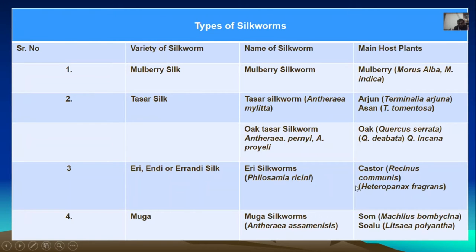The tassel silk is also called oak tassel silkworm — scientific name Antheraea pernyi apriorly — because the main host plant is oak. Hence it is called the oak tassel silkworm.